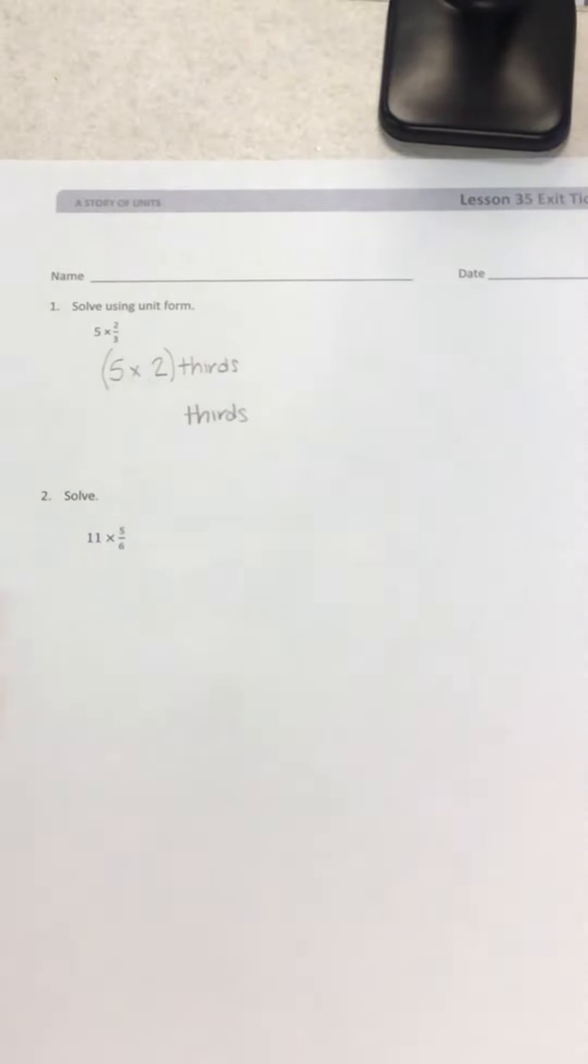Number two, it just says solve. So we can use, instead of using unit form, we can just use our numbers. And so as I look at this problem, 11 times 5 sixths,